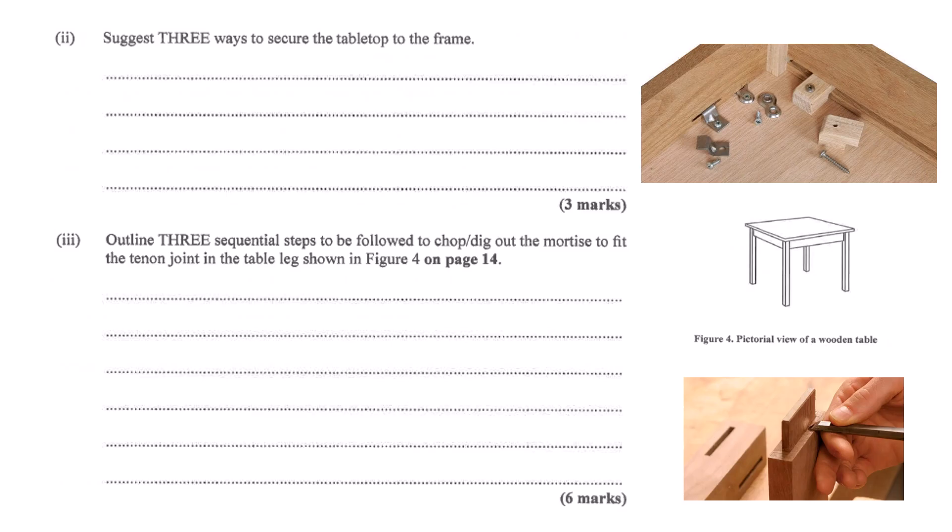Let's loop back quickly to that mortise and tenon. Making the mortise, the hole - how would you actually cut that accurately? First you mark it out very precisely using a marking gauge or sharp pencil and square. Then you need to remove the waste wood inside those lines. You could drill a series of overlapping holes with a drill bit slightly smaller than the mortise width, or you could use a sharp chisel and mallet, carefully chopping out small bits. Then once the bulk is removed, you use the chisel to pare the sides perfectly straight and square and clean out the bottom. So it's a combination of drilling maybe and then fine-tuning with a chisel.